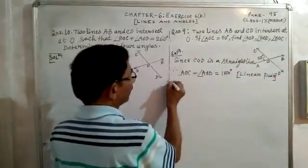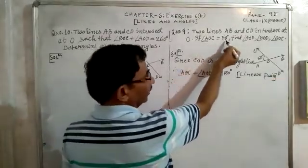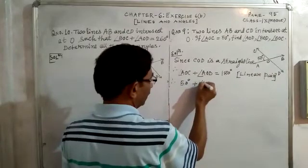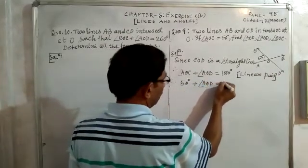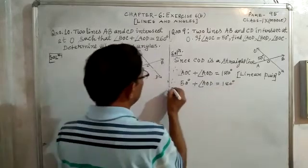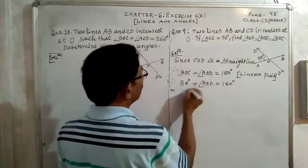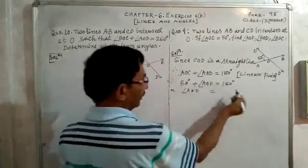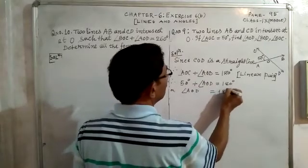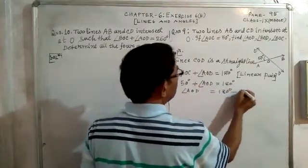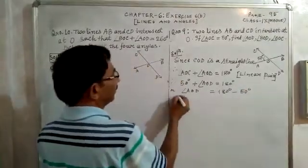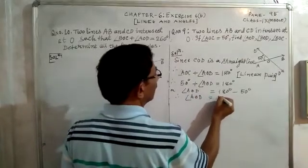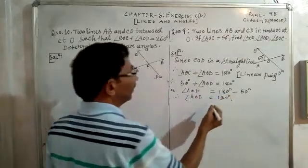We are given angle AOC is equal to 50 degrees. So substituting: 50 degrees plus angle AOD is equal to 180 degrees. Taking 50 degrees to the right side, angle AOD is equal to 180 minus 50, therefore angle AOD is equal to 130 degrees.